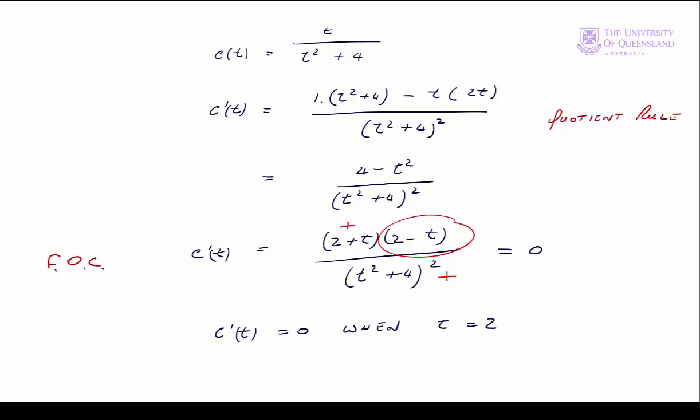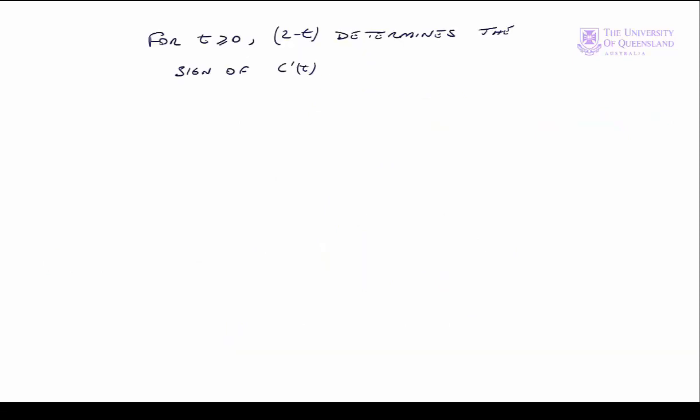How can we tell if that's a maximum or a minimum without looking at the graph? Well, the term 2 minus t also determines the sign of the first derivative. Let's construct a simple sign diagram for our function. For t between 0 and 2, 2 minus t will be positive, so the first derivative will be positive. For t greater than 2, 2 minus t will be negative, so the first derivative will be negative.